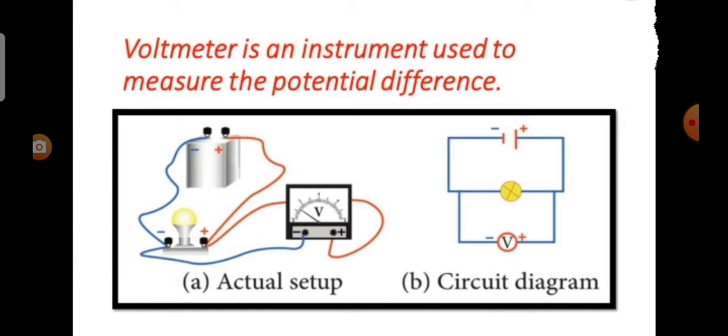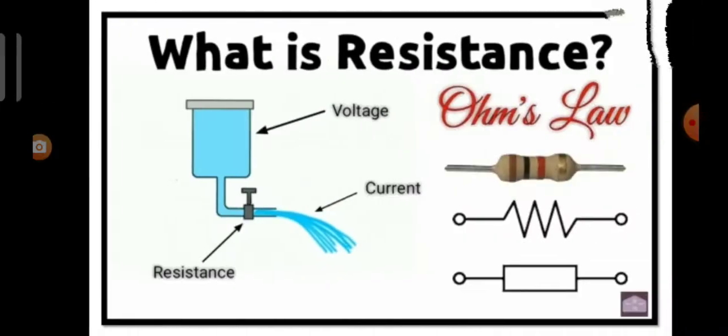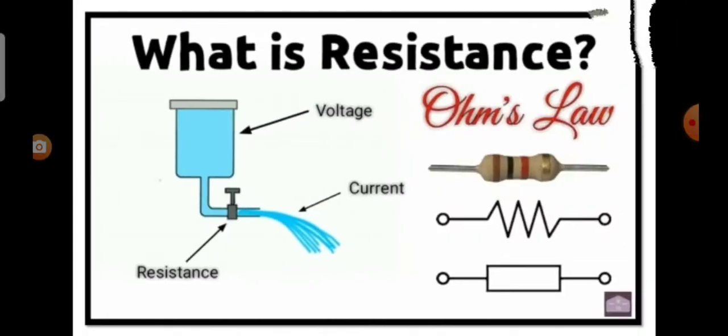Voltmeter is an instrument used to measure the potential difference. To measure the potential difference across a component in a circuit, the voltmeter must be connected in parallel to it. To measure the potential difference across the light bulb, you need to connect the voltmeter.